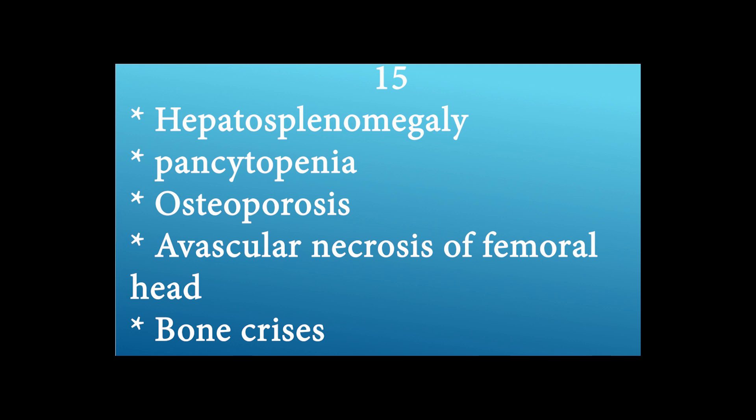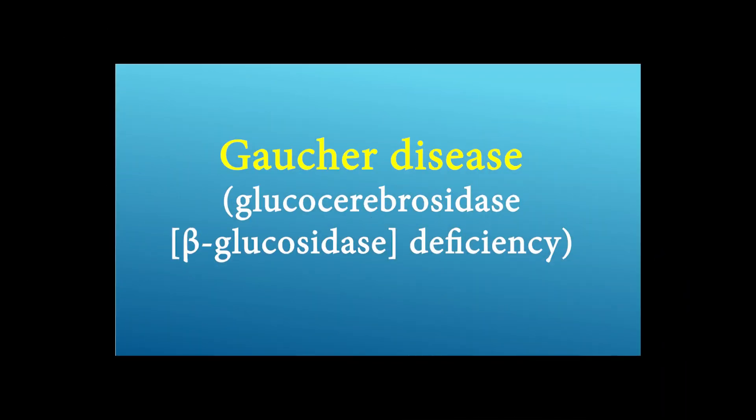What is the diagnosis of these presentations? Hepatosplenomegaly, pancytopenia, osteoporosis, avascular necrosis of the femoral head, and bone crises. The answer is Gaucher disease — glucocerebrosidase (beta-glucosidase) deficiency.